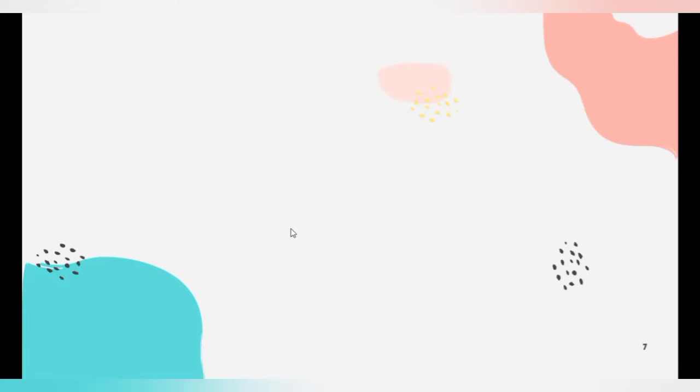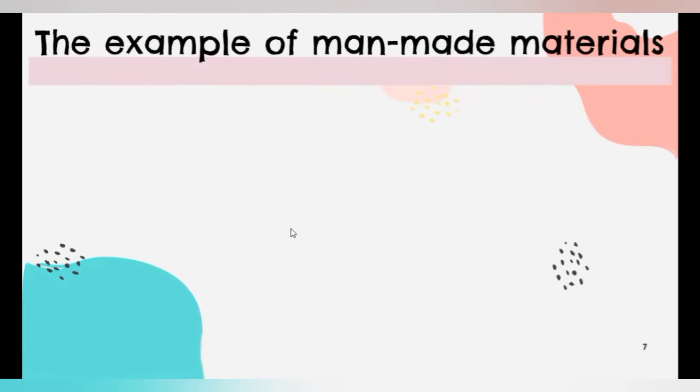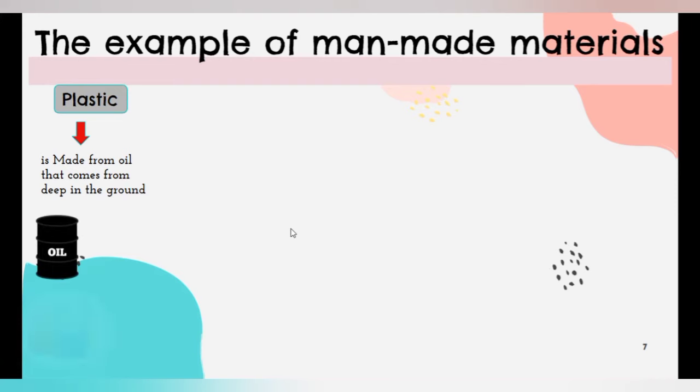Now let's take a look at the example of man-made materials. First, plastic. Plastic is made from oil that comes from deep in the ground. It can be used to make plastic bags, plastic toy, plastic cup, and straw.